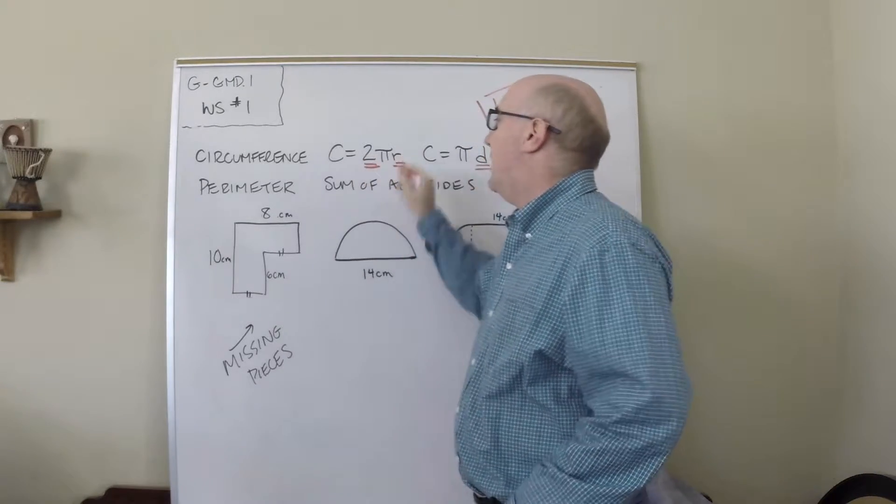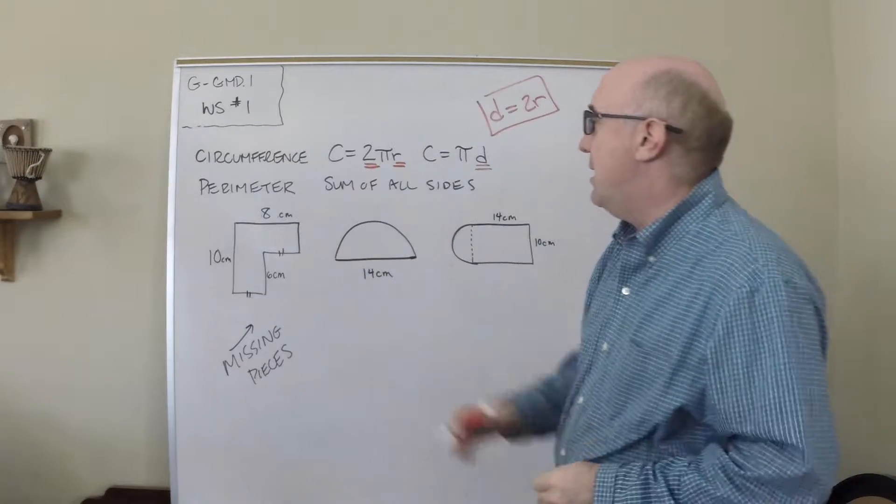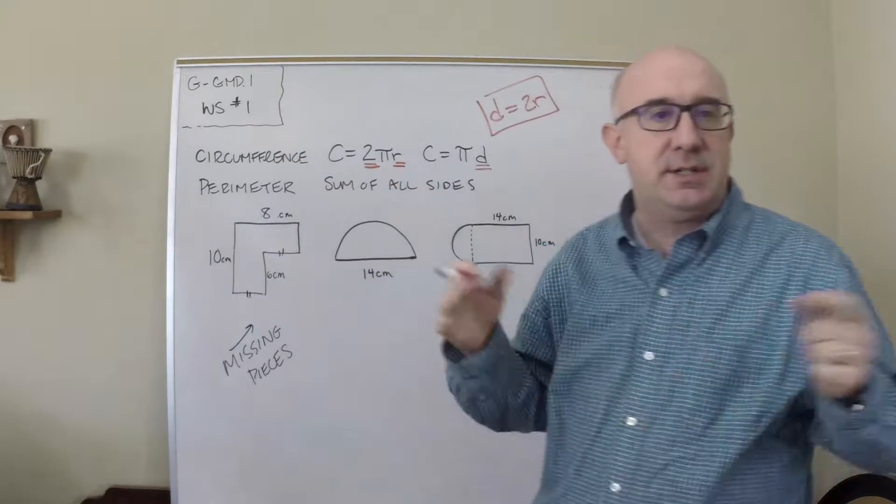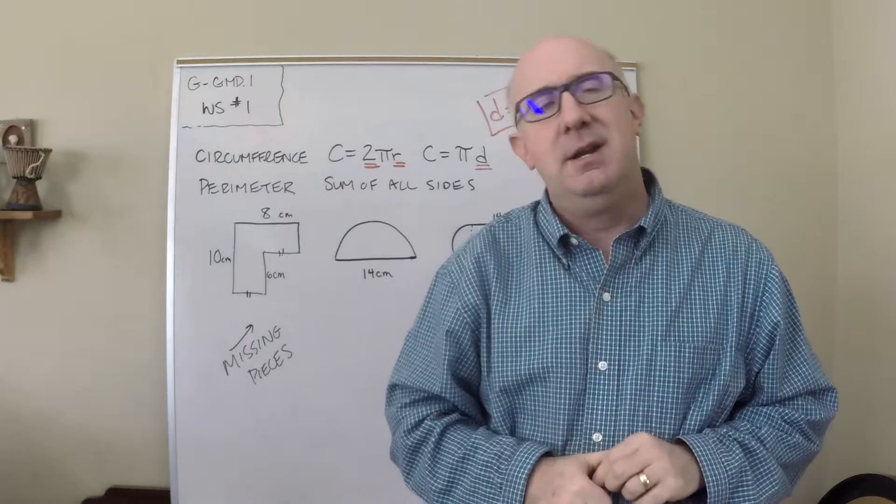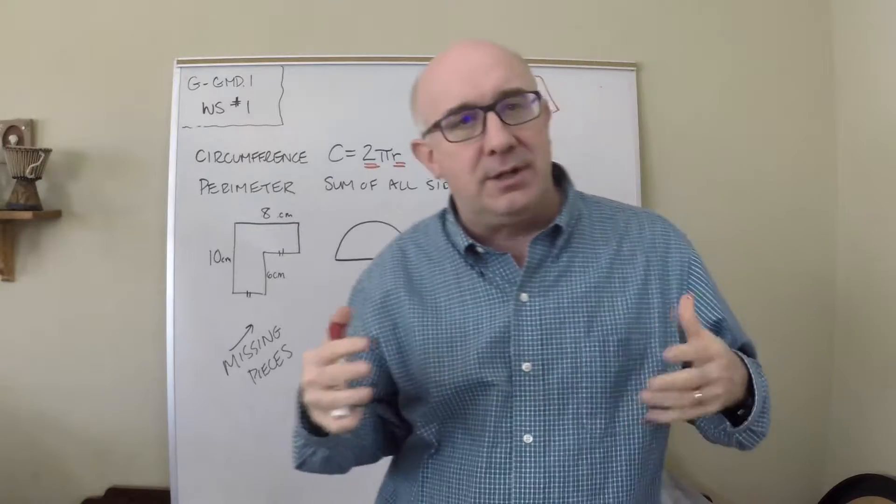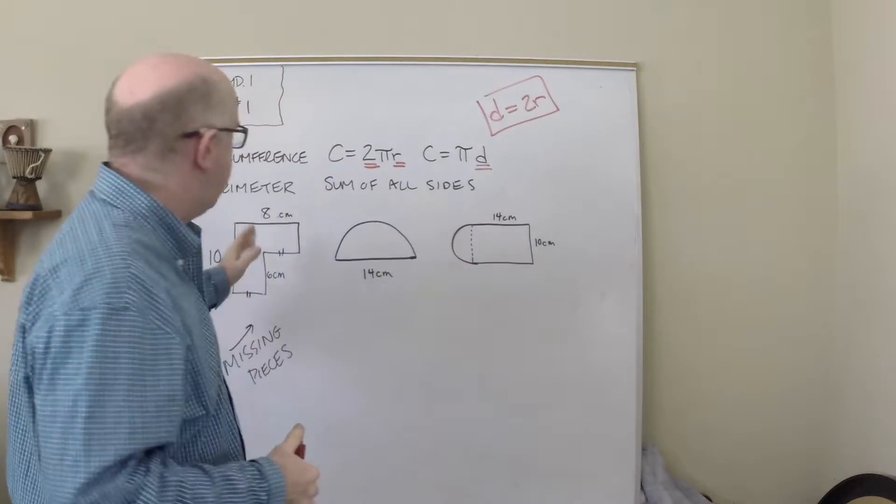The other is perimeter, which is just the distance around a polygon—you just sum all of those distances. We're in high school, so we're going to try and make that a little trickier than the basics.